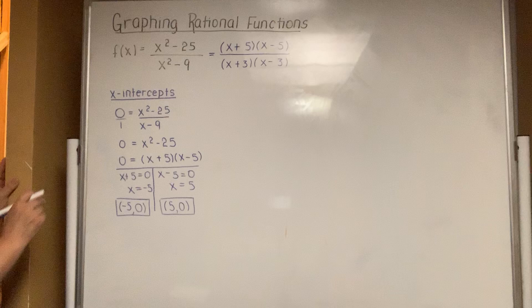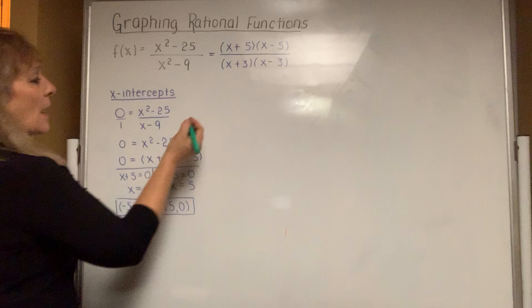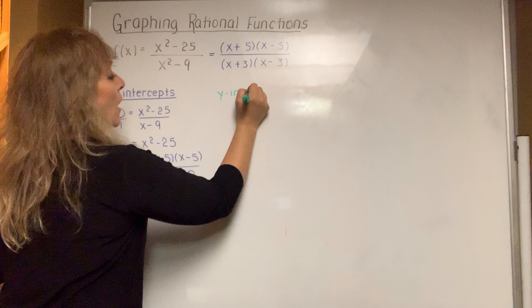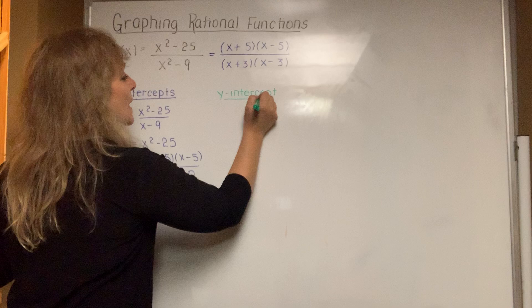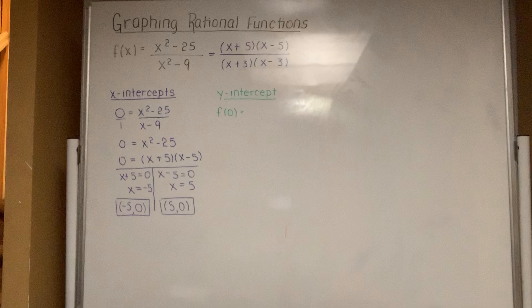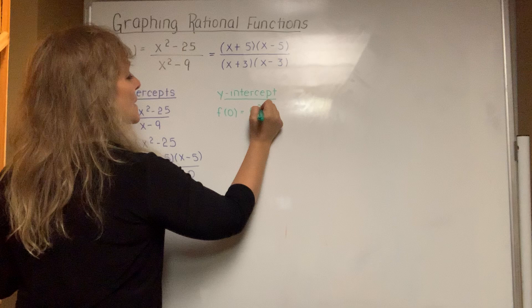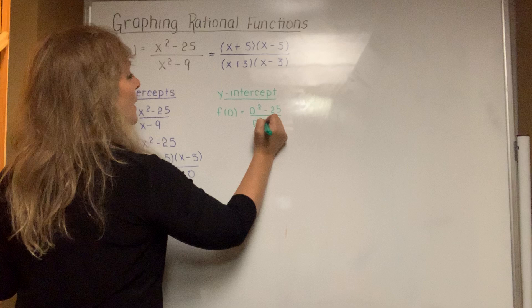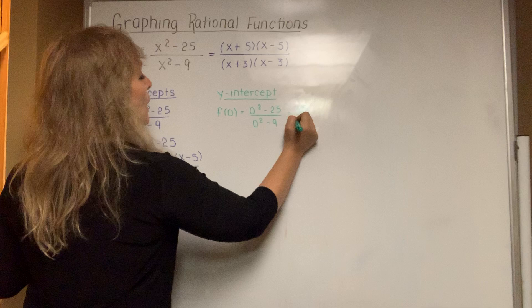The next section asks for the y-intercept. Because it's a function, there can only be one y-intercept — otherwise it would fail the vertical line test. To find the y-intercept, all you have to do is evaluate the function at zero. I'm still going to use the function written in black, plugging in zero for all the x's in the numerator and all the x's in the denominator.